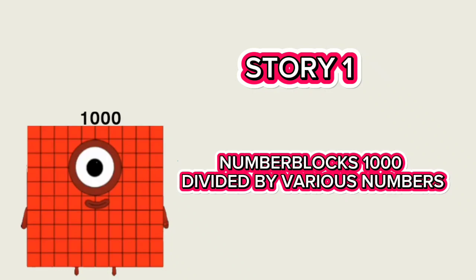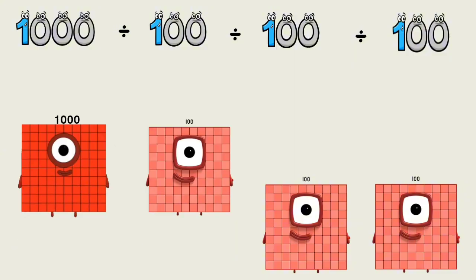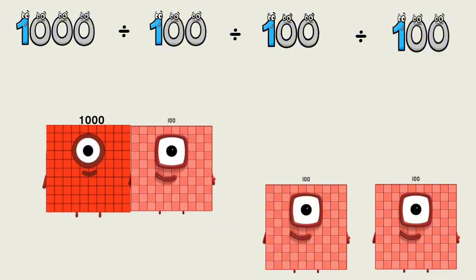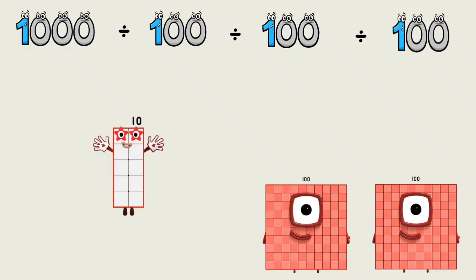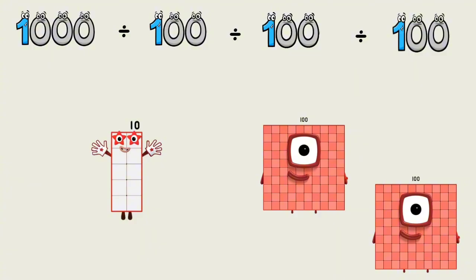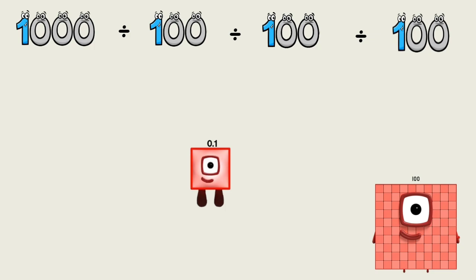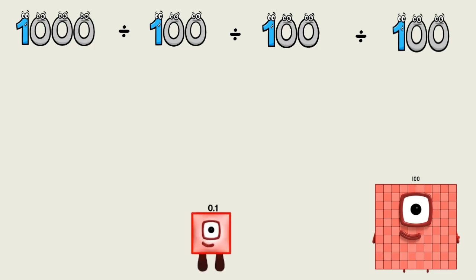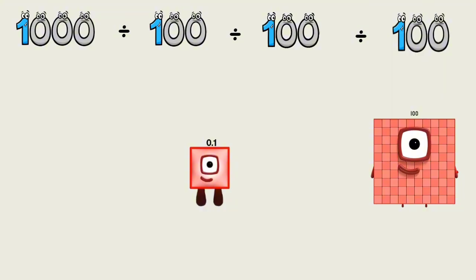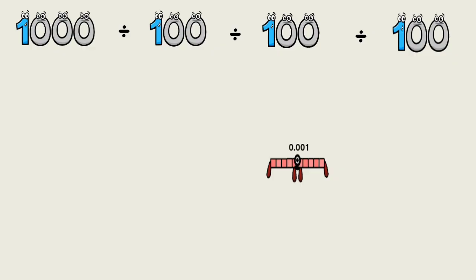Number blocks: 1,000 divided by various numbers. 1,000 divided by 100 equals 10. 10 divided by 100 equals 0.1. 0.1 divided by 100 equals 0.001.